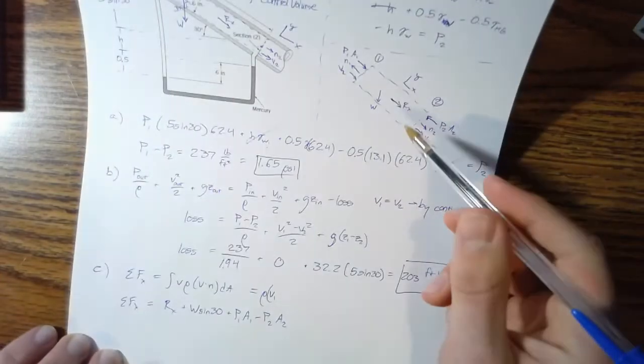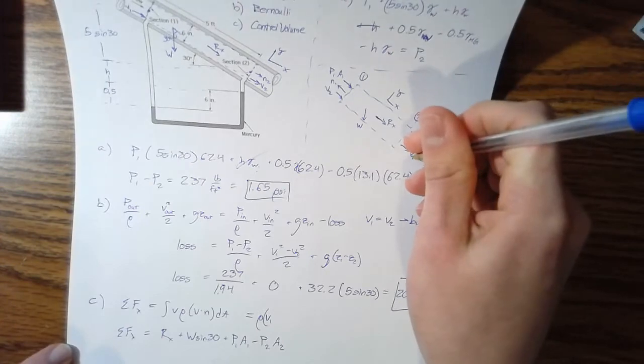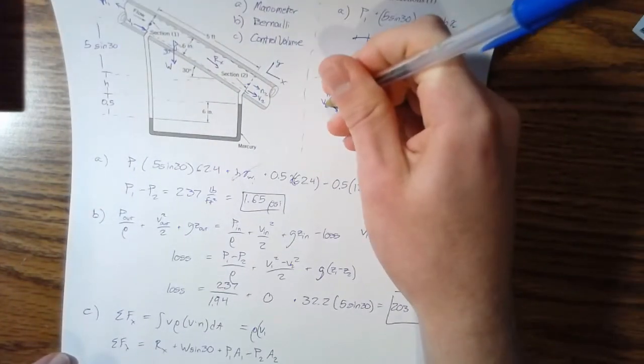All right. So for part one or for surface one, which is up here, we have N one and V one acting in opposite directions, which means that their dot product is going to be negative.